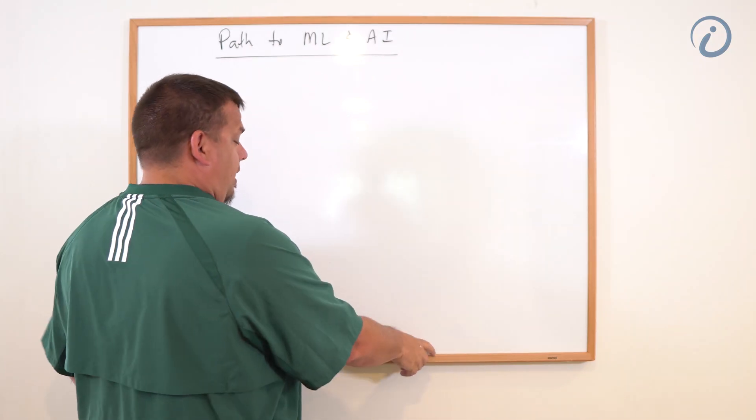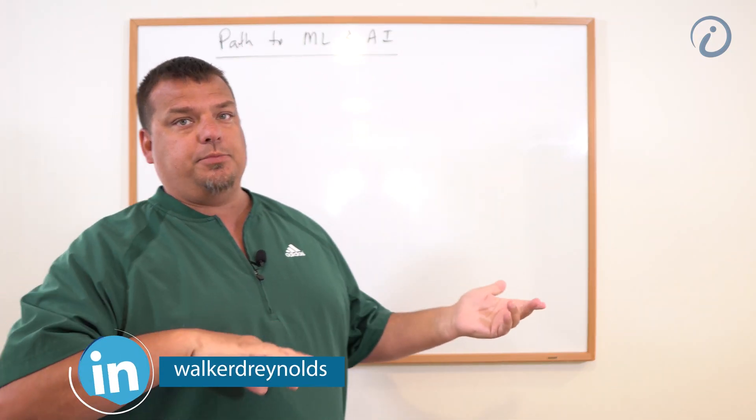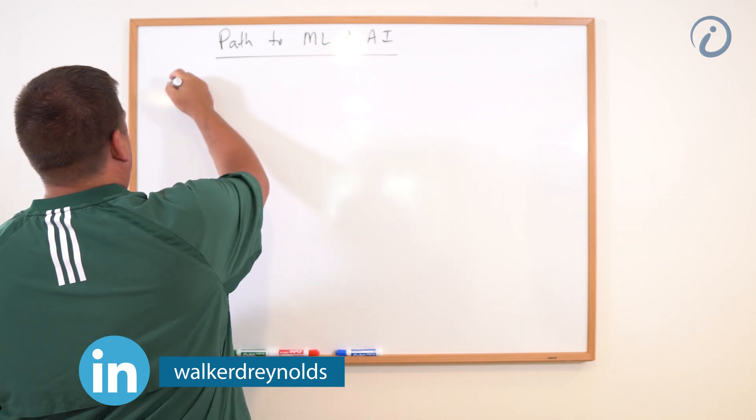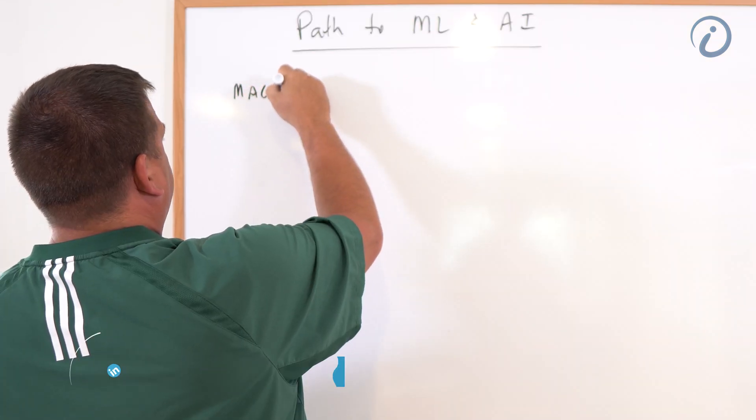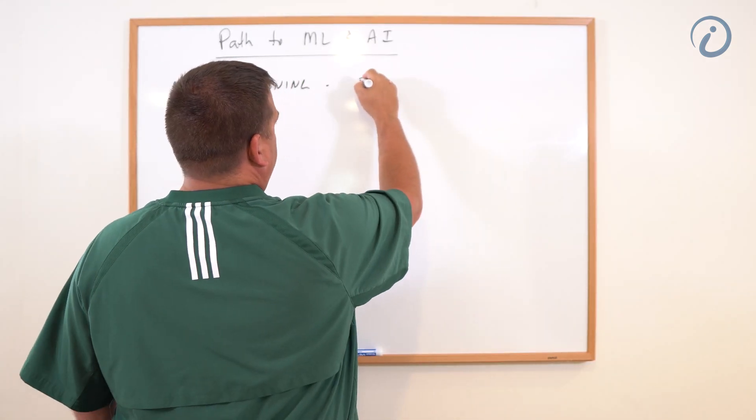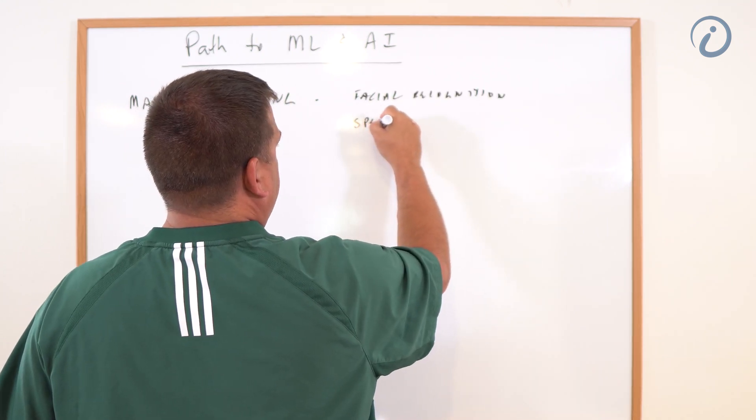This is a quick video that's a follow-up to what is machine learning and what is AI. So examples of machine learning, the two most common examples: facial recognition and speech to text.